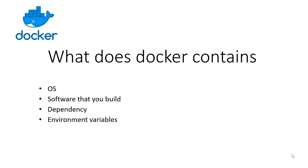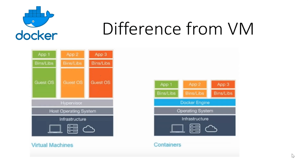Let's see what Docker contains. Docker can contain an OS — it can be any OS like Linux or Windows. It contains the software that you build, which can be a complete software, a component of software, or any kind of microservice. It can also contain dependencies — for example, if your software depends on Java and some other libraries, all those dependencies can be resolved within the Docker environment. We've seen the problem where an application works in one environment but not another, but Docker can contain all the environmental variables so you can use that application in different environments.